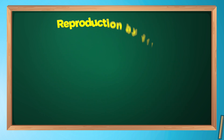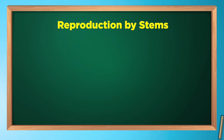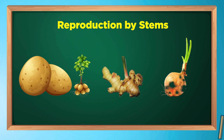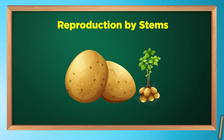We already know about underground stems which store food, like the potato, ginger, and onion. The new plant grows from the specific part of these stems. The potato has a small bud on its eye. If we cut a potato piece from its eye and put it under the soil, it will grow into a new plant under favorable conditions.